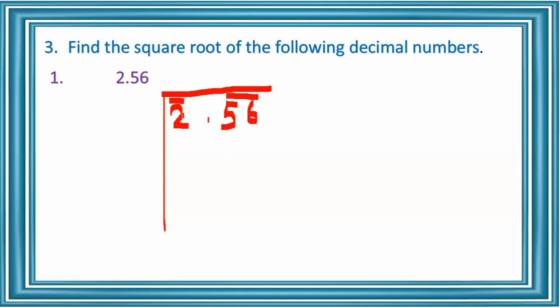The first group is 2 only. We find the perfect square less than or equal to 2, which is 1, since 1×1=1 and 2×2=4. So we take 1 and write it in both the quotient place and the divisor place. Then 2 minus 1 is 1. Next, double the divisor: 1×2 = 2, and leave a blank at the right side.